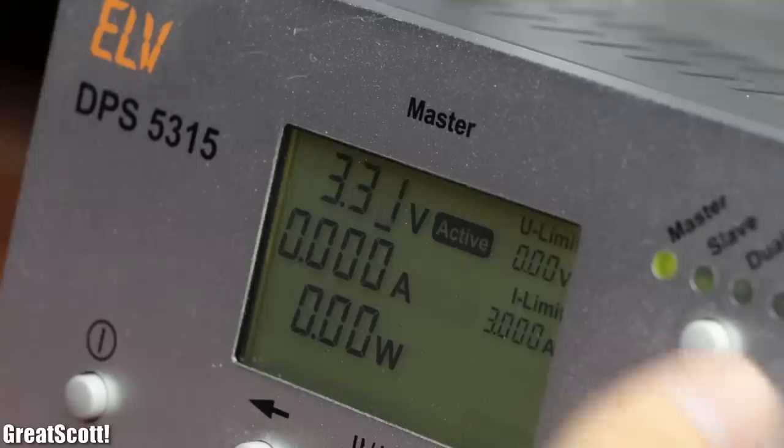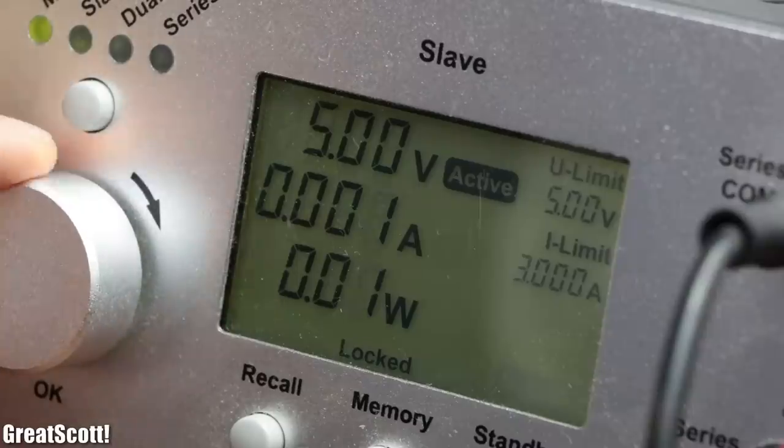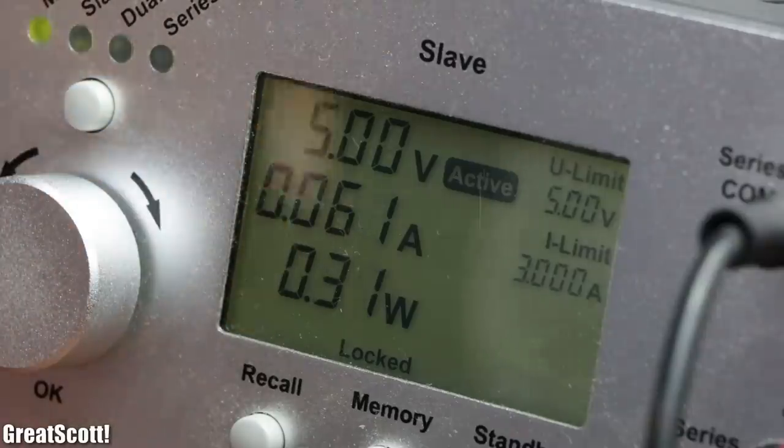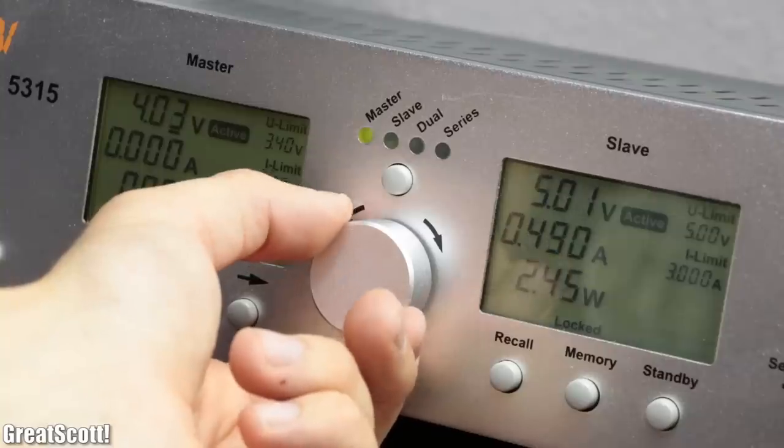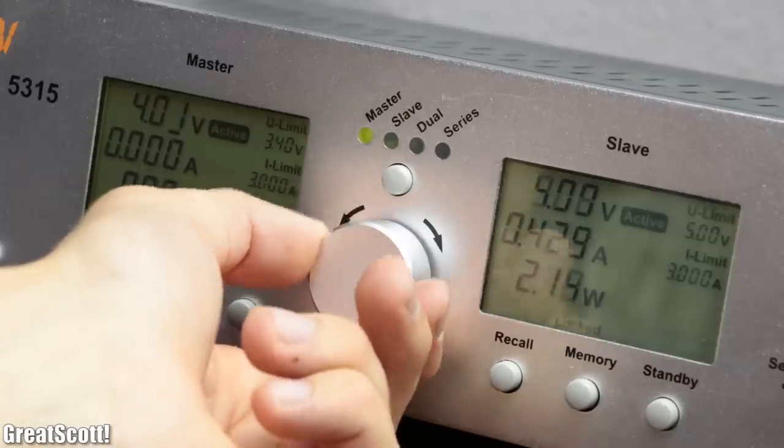As you can see at a voltage level of around 3.4 volts, the MOSFET starts working in its saturation region and thus can be used kind of like a variable power resistor.